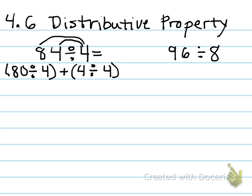8 divided by 4 is 2, carry the 1 — so 80 divided by 4 is 20 — plus 4 divided by 4 is 1. 20 plus 1 is 21.